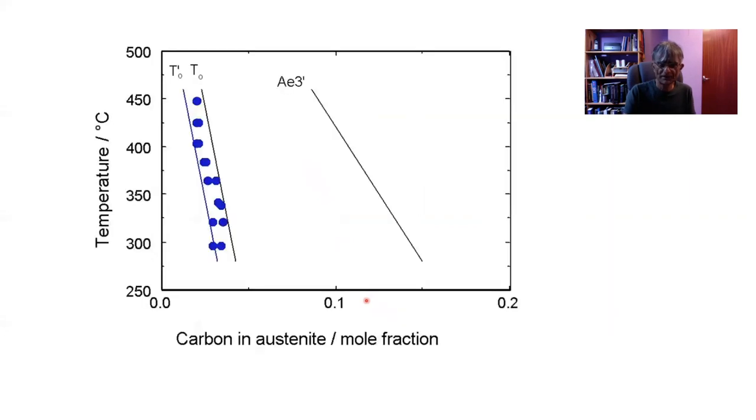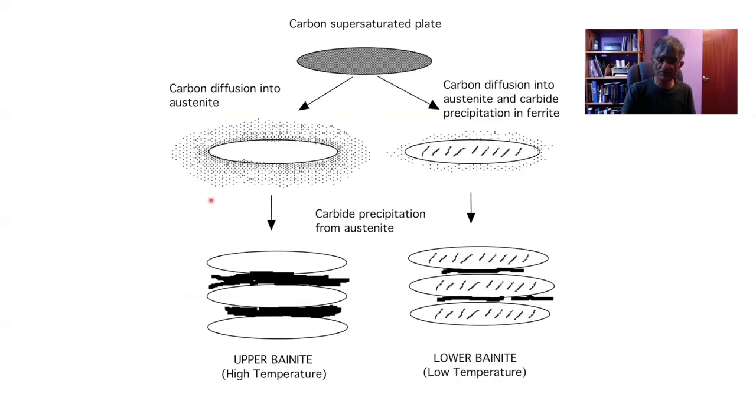The experimental data agree with this construction and therefore we conclude that the transformation occurs without any diffusion in the first instance, followed by the partitioning of carbon into the residual austenite. Carbon does not want to stay in the product lattice; it was forced into that lattice by the mechanism of transformation, was trapped effectively. At high temperatures that partitioning process is very rapid so you're left with a plate which is free from carbon or carbides.